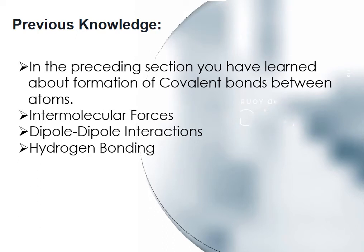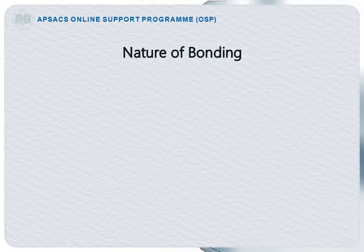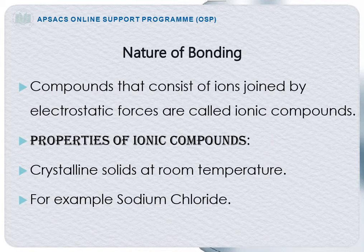Hydrogen bonding is the interaction of a highly electron-deficient hydrogen and a lone pair on a nearby highly electronegative atom, such as nitrogen, oxygen, or fluorine. Dear students, our new topic is the nature of bonding. Ionic compounds are compounds that consist of ions joined by electrostatic forces.